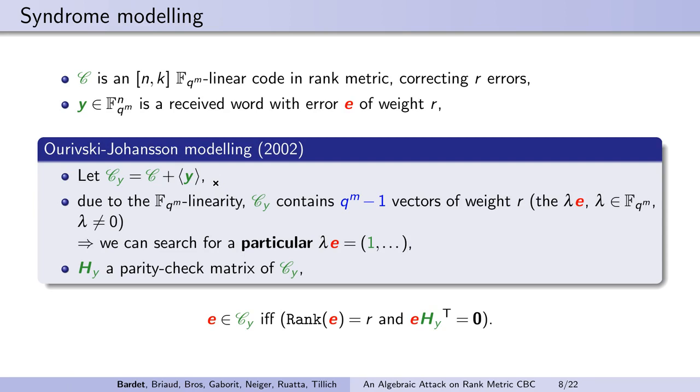This means that we can search for a particular solution and specify some of the unknowns. Such codewords are characterized by two conditions. The rank of E is equal to r, and E belongs to the code C_y. The second condition can be easily described algebraically using a parity check matrix of the code, which is a generator matrix of the dual of the code, and the equation E·H_y^T = 0.